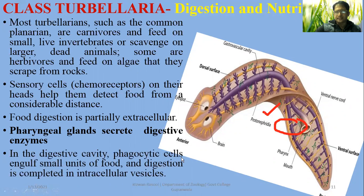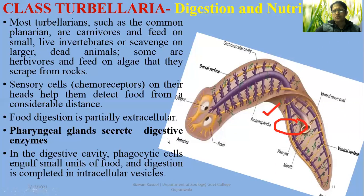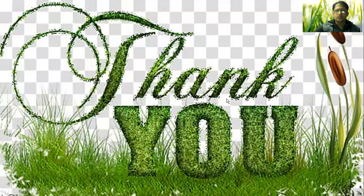Food digestion is partially extracellular and partially intracellular. Pharyngeal glands secrete digestive enzymes associated with the pharynx. The branched gastrovascular cavity and branched tubules help with further distribution of nutrients throughout the body. That covers the basic characteristics of Class Turbellaria, and the next features will be discussed in the upcoming video. Thank you for listening.